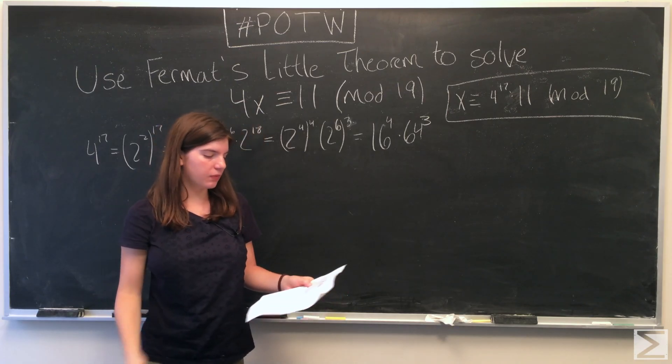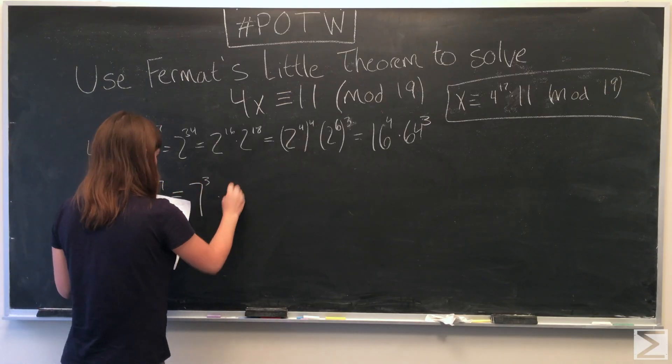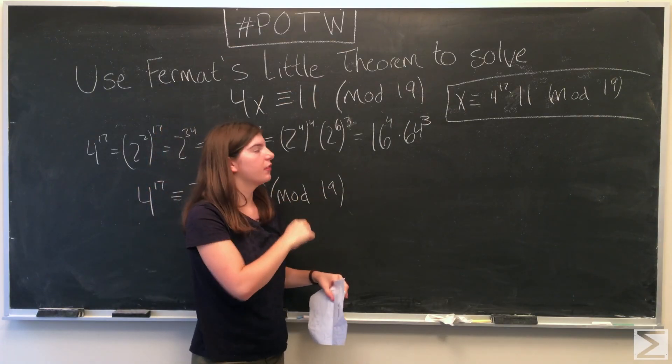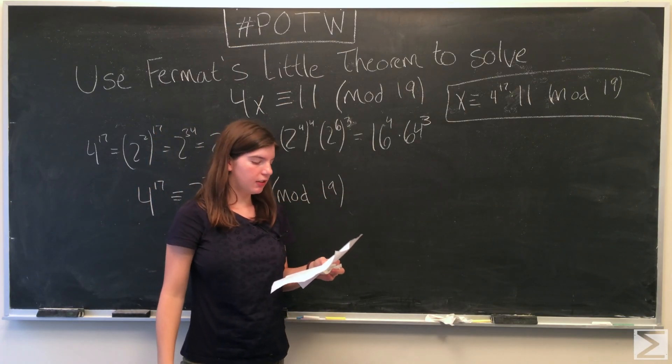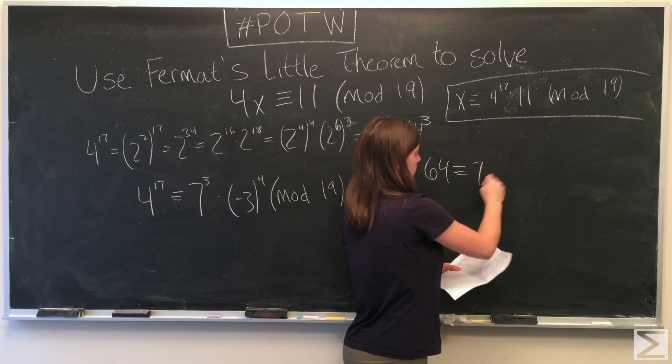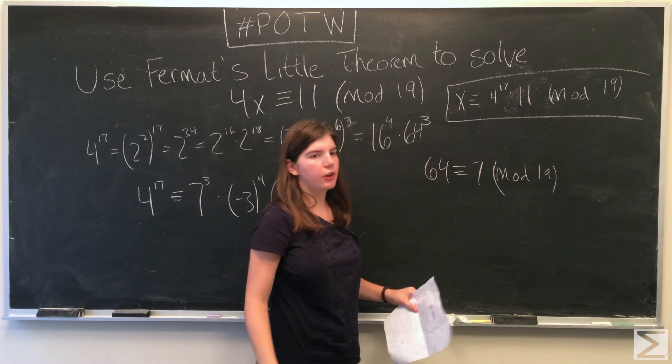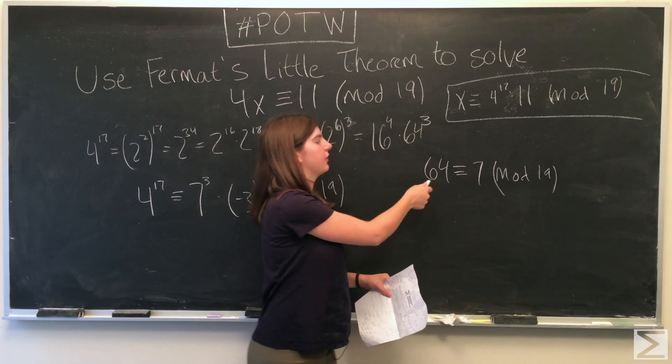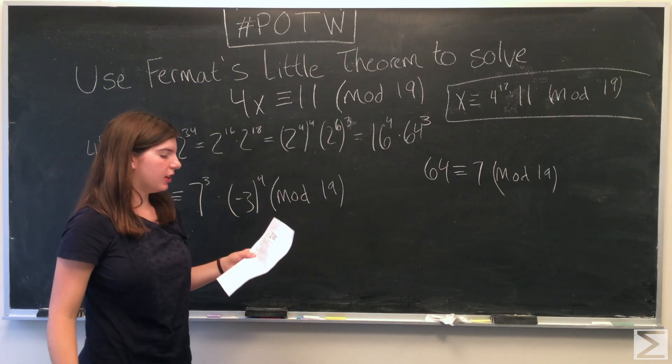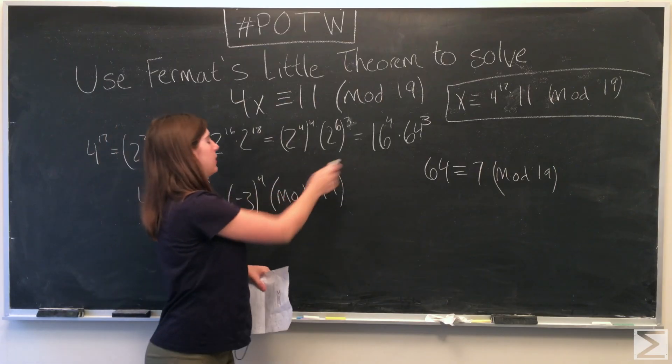Now we can simplify more. When 64 is divided by 19, there's a remainder of 7. So 64 is congruent to 7 modulo 19, so we can replace the 64 with a 7. And then 16 is congruent to negative 3 modulo 19, so we replace the 16 with a negative 3.